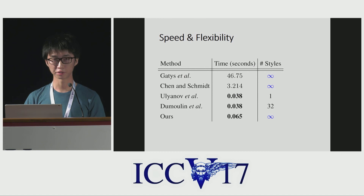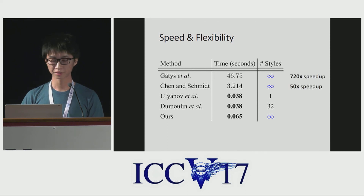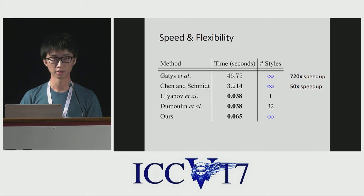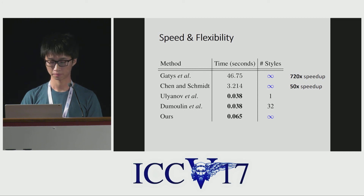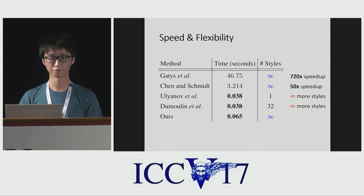Here we show a comparison between different style transfer approaches in terms of speed and flexibility. Our method is much faster than other methods that can transfer arbitrary styles. For example, it is more than 700 times faster than Gatys' original algorithm and about 50 times faster than the recent algorithm by Chen and Shumin. Compared with Ulyanov et al. and Dumoulin et al., our algorithm has comparable speed. However, we can transfer arbitrary styles using a single network, while their networks are limited to a finite set of styles.